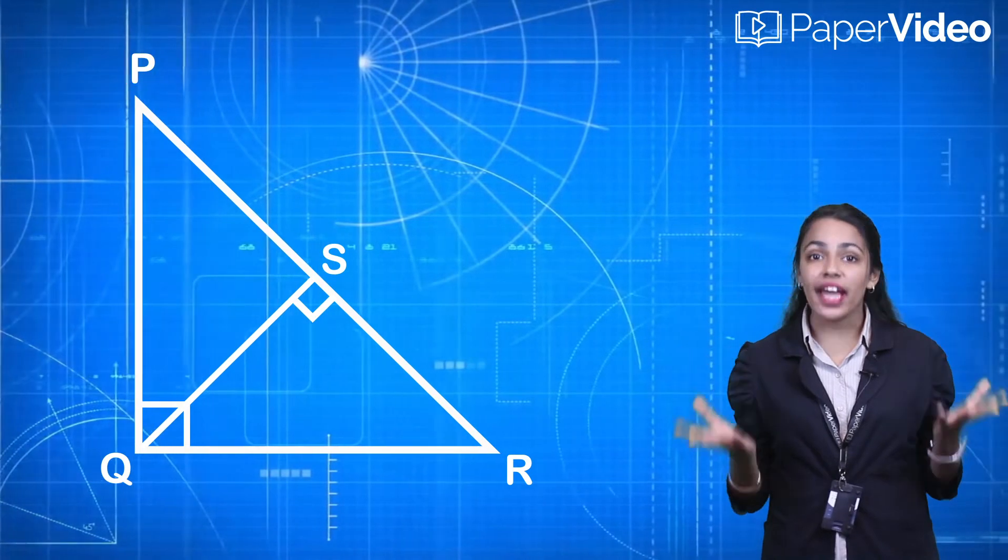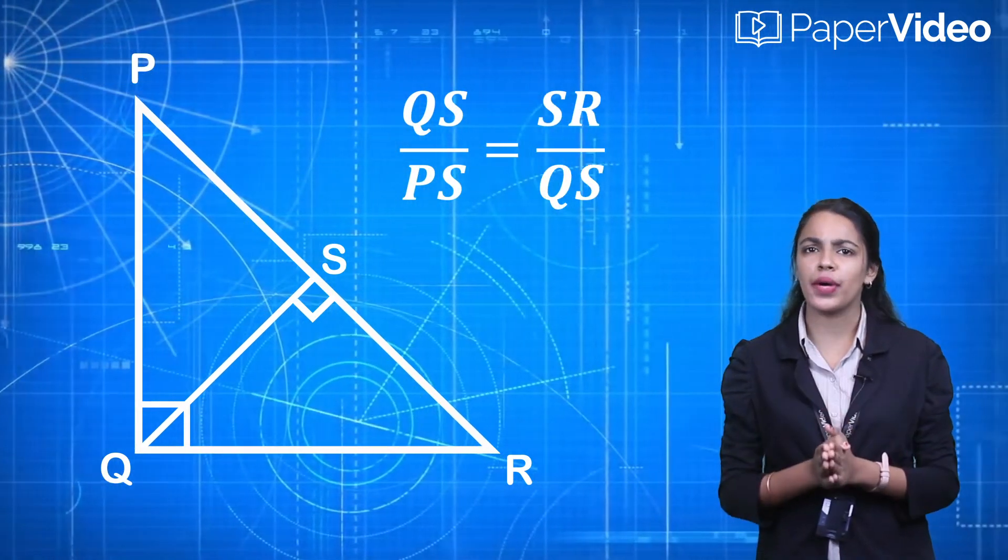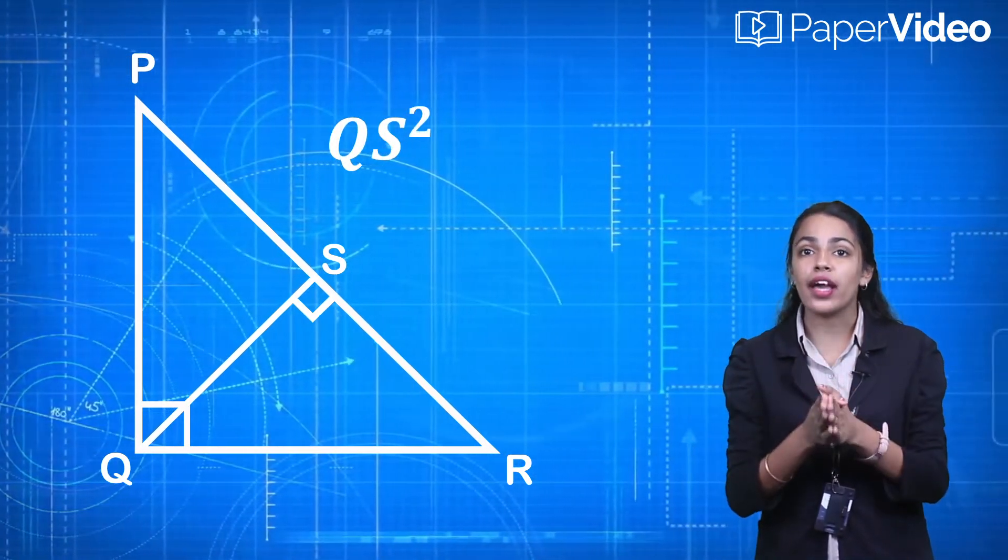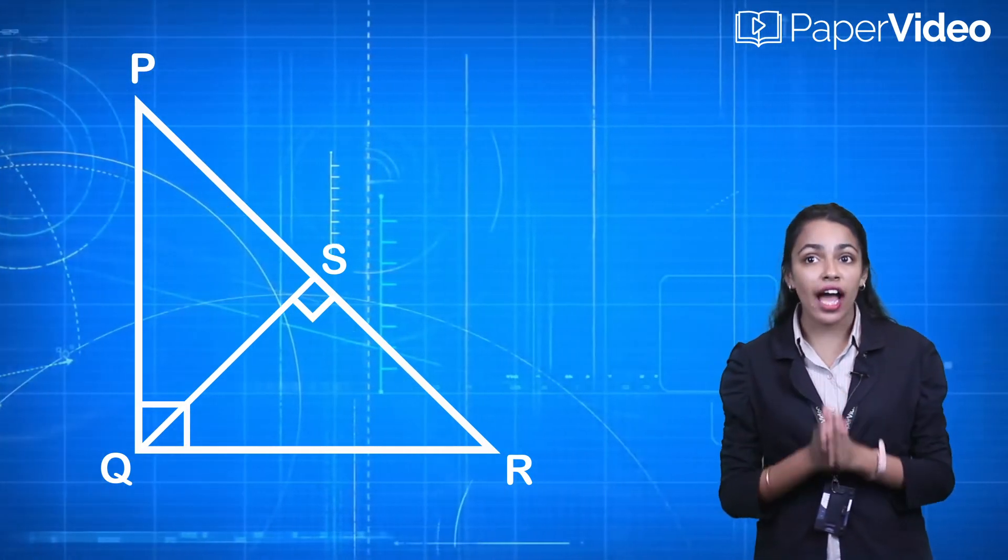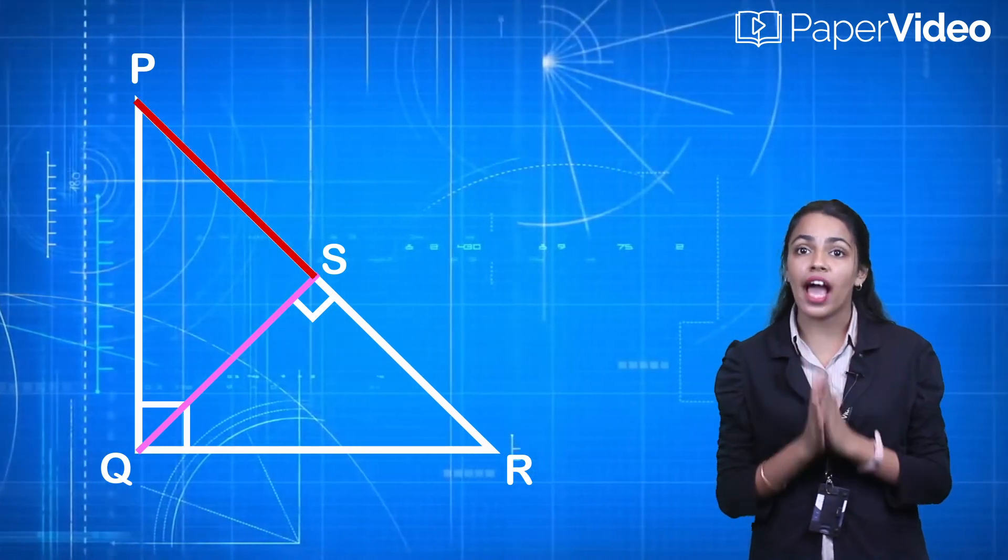So we get QS upon PS equal to SR upon QS. After rearranging, we get QS squared equal to PS times SR. This means that QS is the geometric mean of PS and SR.